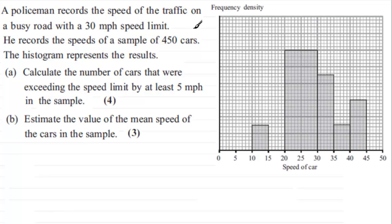Well what we've got here is a policeman records the speed of the traffic on a busy road with a 30 mile per hour speed limit and he records the speeds of a sample of 450 cars and this histogram represents the results.